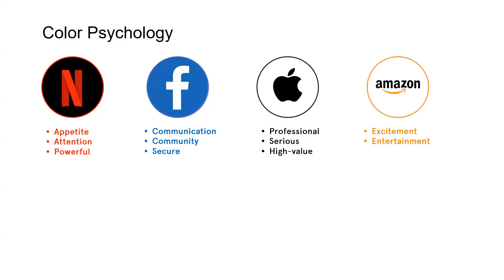Orange illustrates excitement and is sometimes used by entertainment companies. Amazon uses orange because they want to illustrate the excitement their user feels whenever they receive a package. Yellow symbolizes happiness, friendliness, and warning — the photo film company Nikon uses it to illustrate that happiness is captured in their film. Starbucks uses green to indicate the freshness of their coffee and that their coffee is usually taken on the go, outdoors.